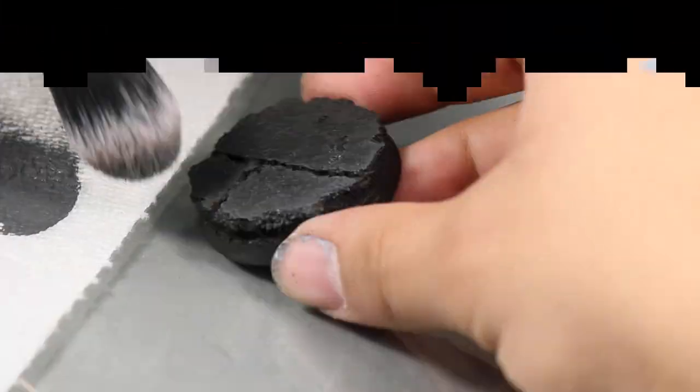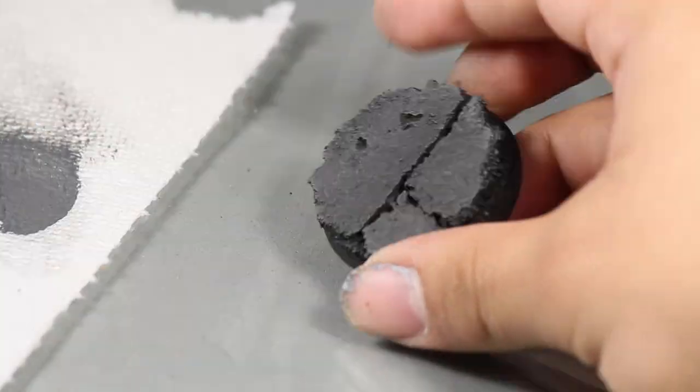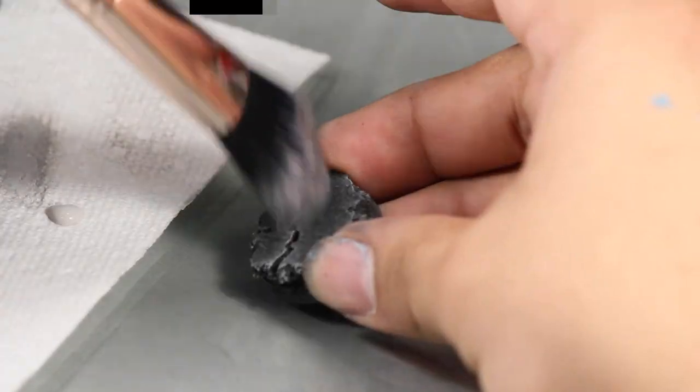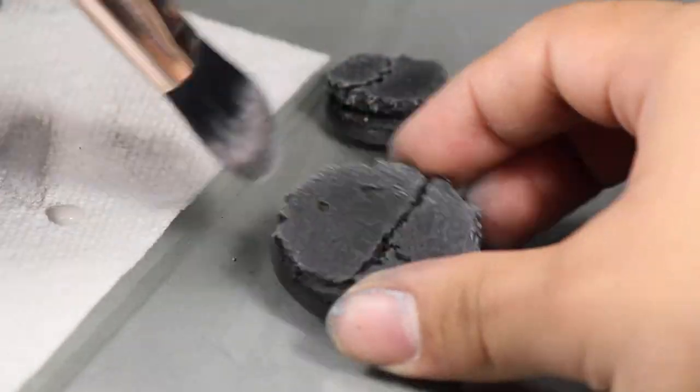Then I began dry brushing some Games Workshop Eschen Grey. Then I moved on to some Vallejo Stonewall Grey and I used this mostly on the edges and cracks to bring them out.